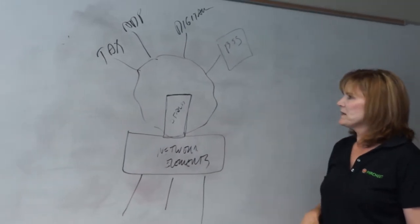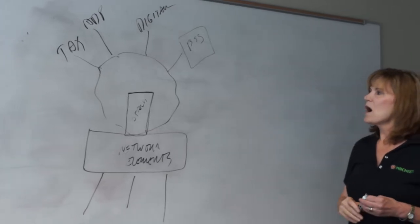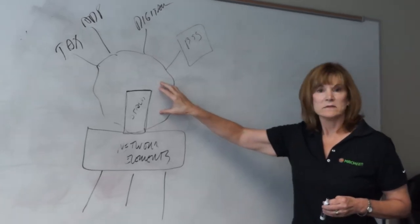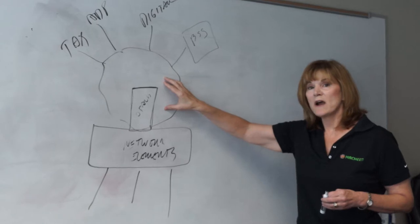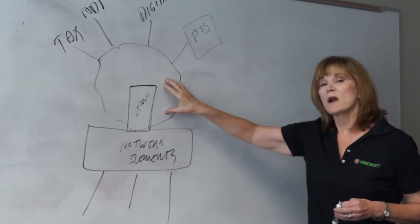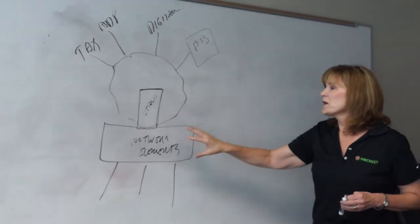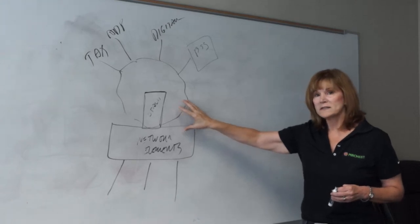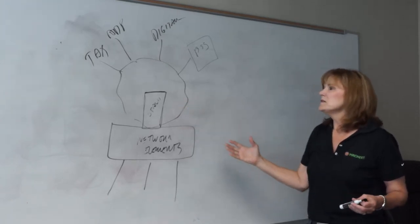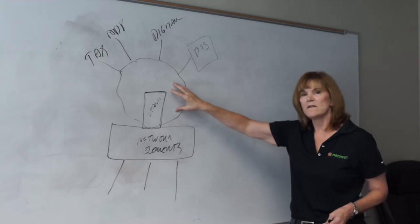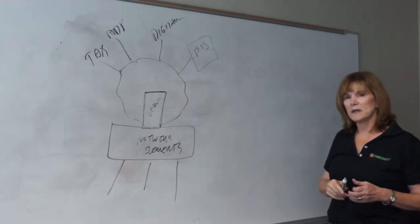The other unique thing we did in order to reduce costs is we built all this in the clouds. So we used the Amazon EC2 environment as well as Terramark hosting in order to create this environment a low-cost, scalable way. So as we need new instances, as we begin to scale, we can just fire up another instance of what we need.